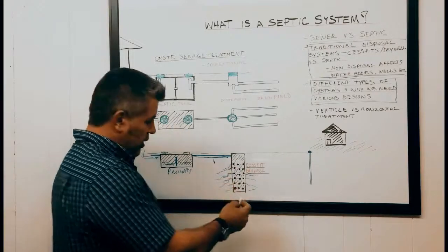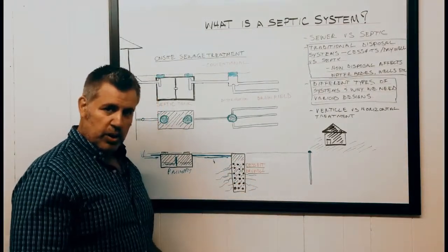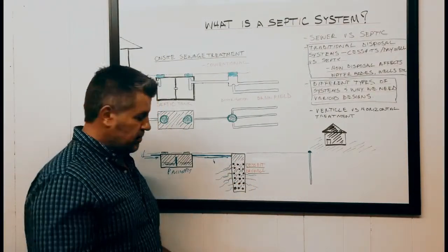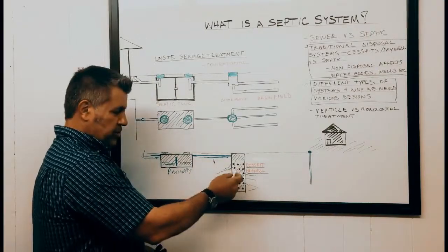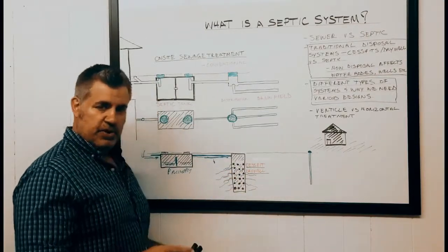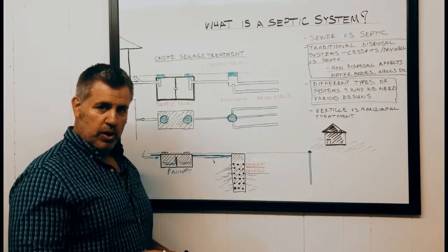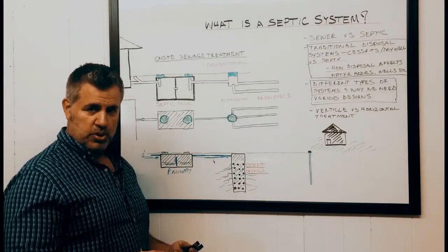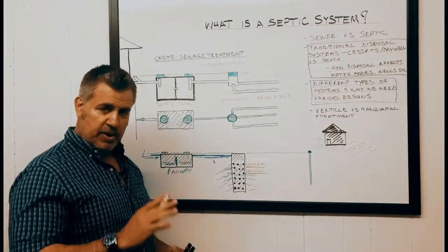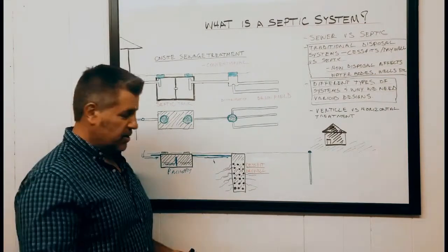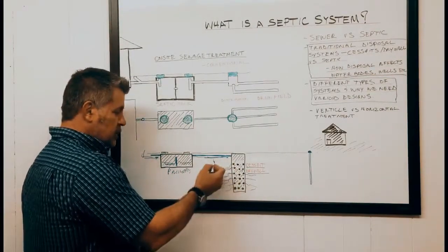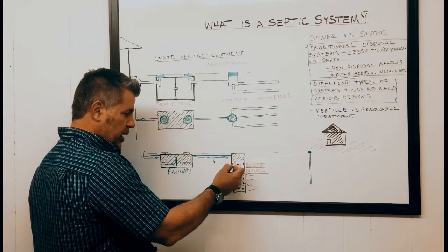That water would then make its way into either a cesspit or dry well where it would get disposed. These traditional methods were not very efficient at treating our wastewater but they were efficient at just disposing. There's quite a bit of a difference between treating and disposing and I'll explain why.